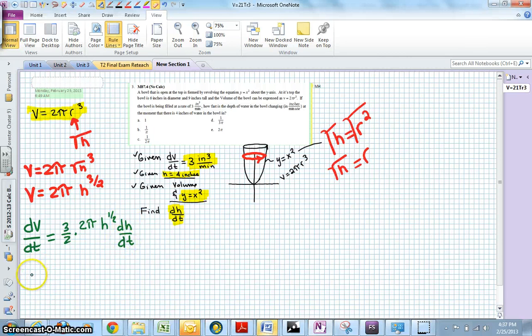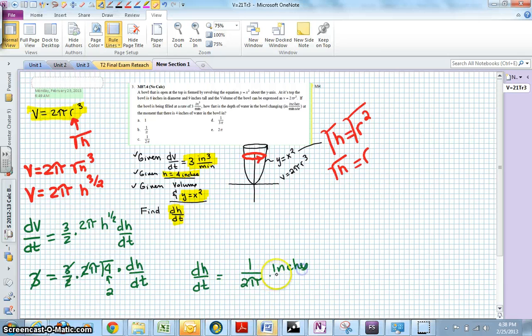When you do that, you have 3 equaling 3 over 2 times 2 pi times 4 to the 1 half times dh dt. Our 3's cancel, our 2's cancel, the square root of 4 is equal to 2, and so dh dt equals 1 over 2 pi and our units would be inches per minute.